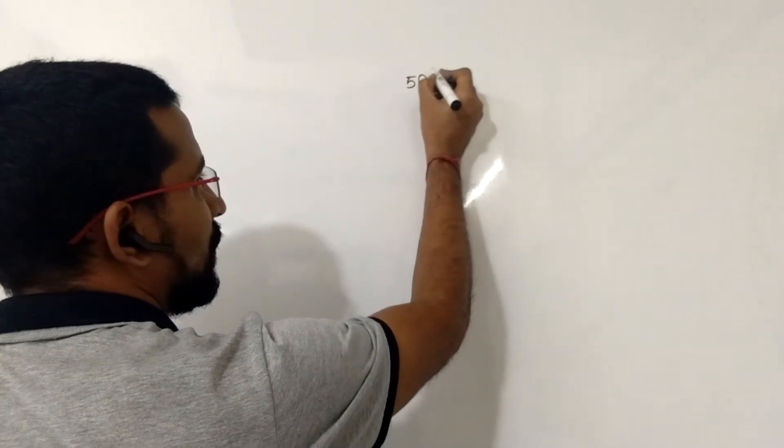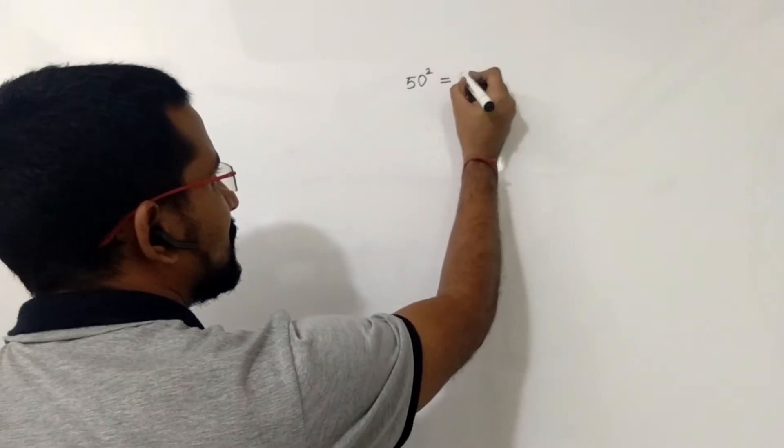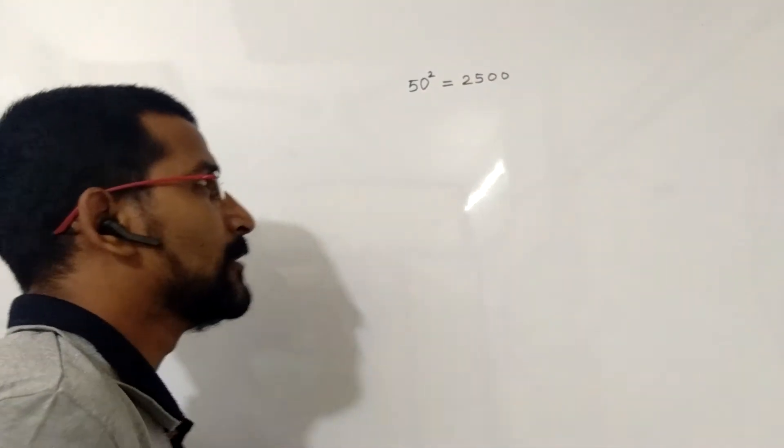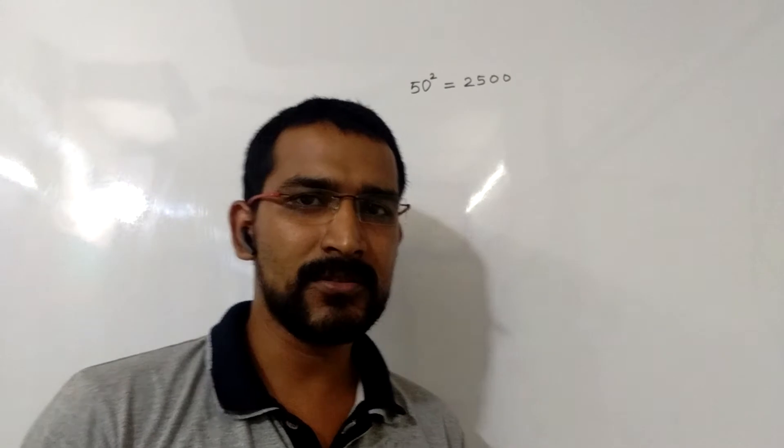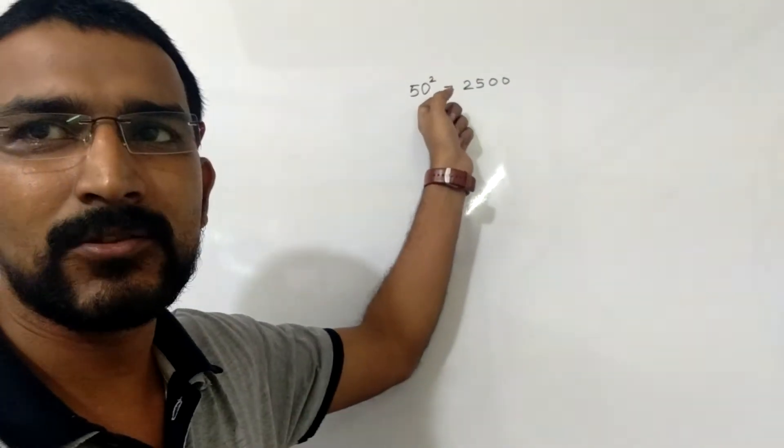Hello. In this session, I will explain how to find the square of any number between 30 and 70 within a few seconds. The middle value between 30 and 70 is 50, so we take 50 as our base value. The square of 50 is 2500. We will compare all values between 30 and 70 with 50 squared.